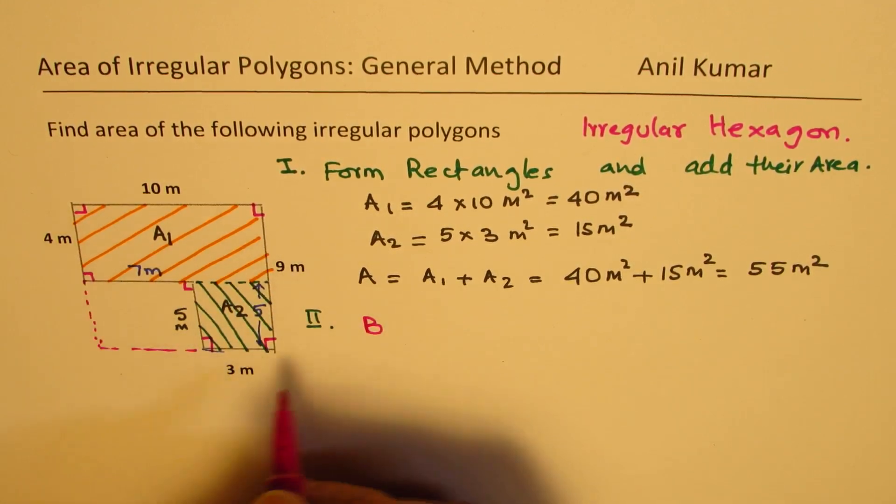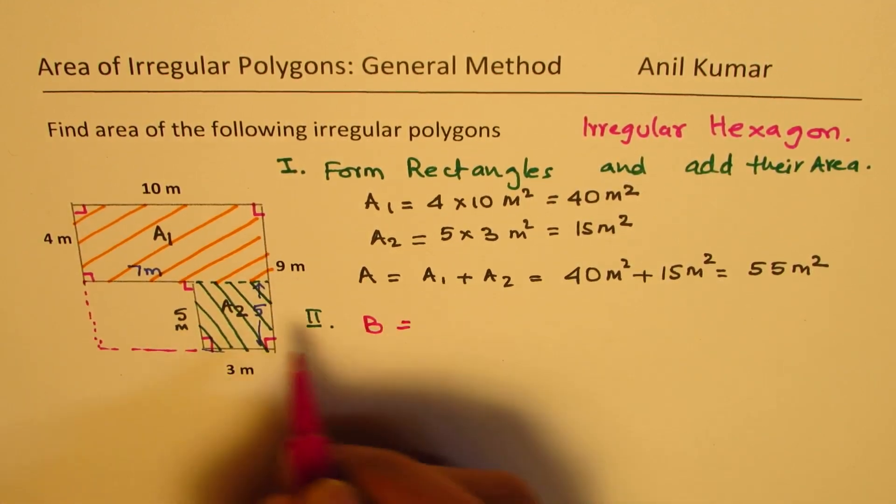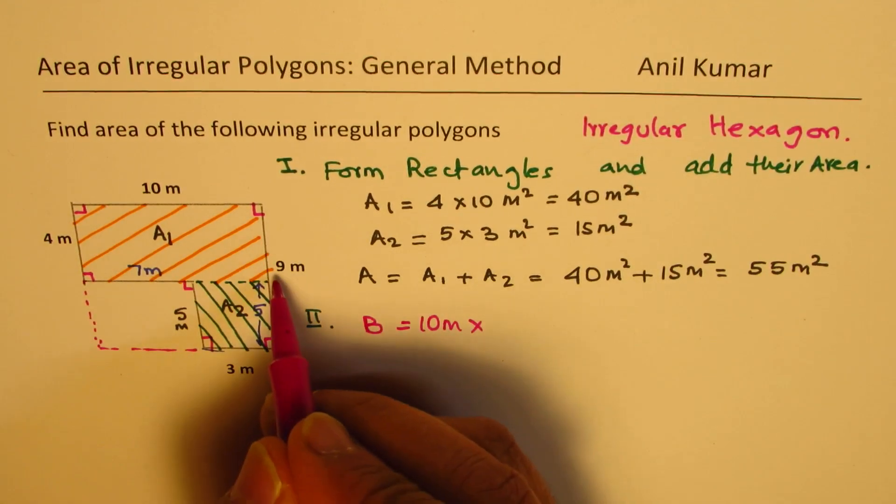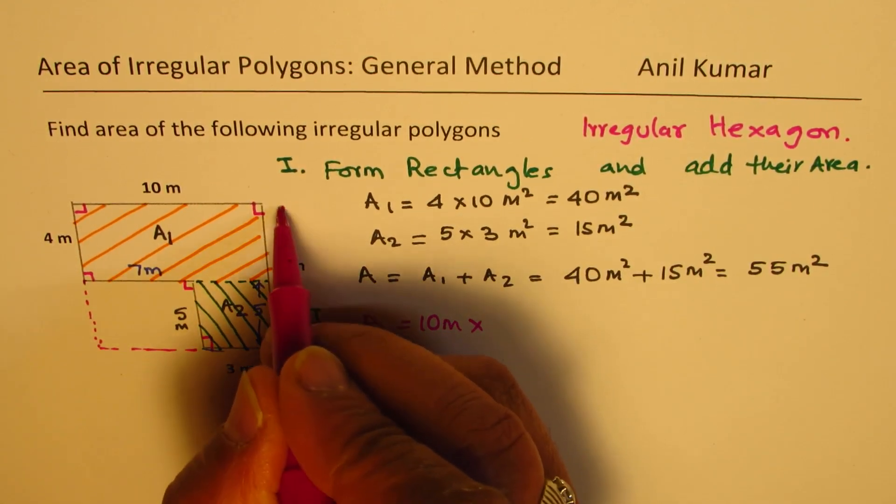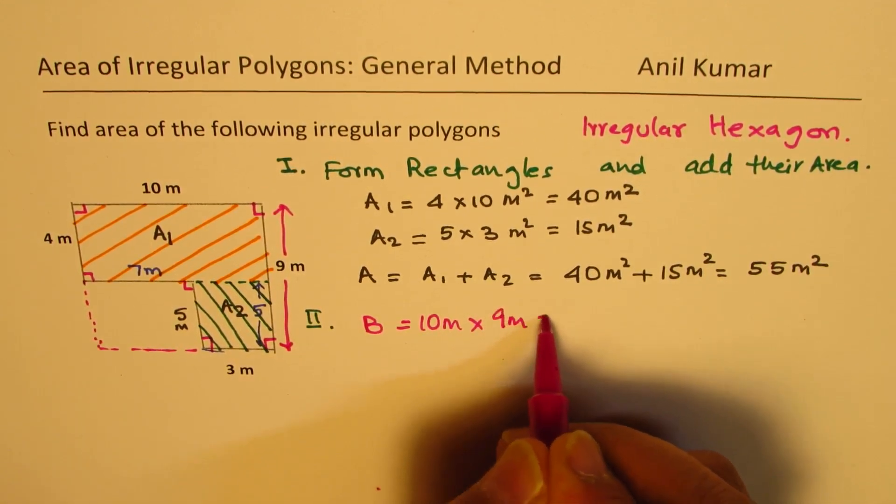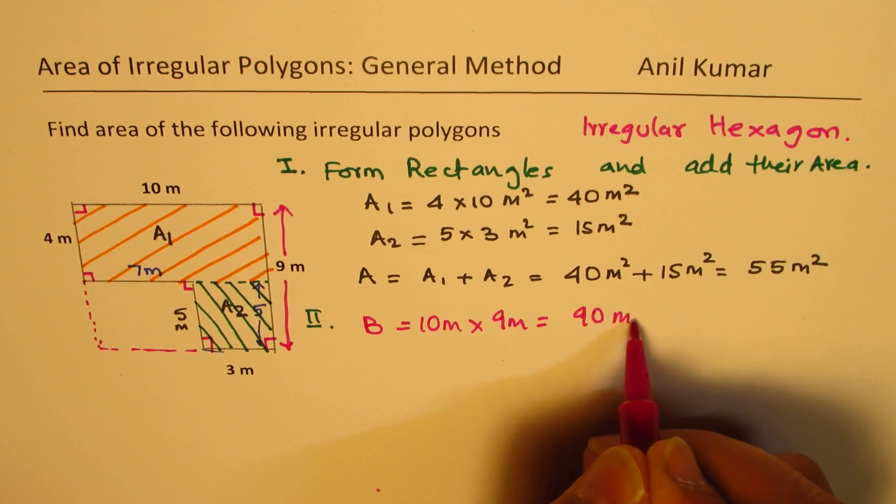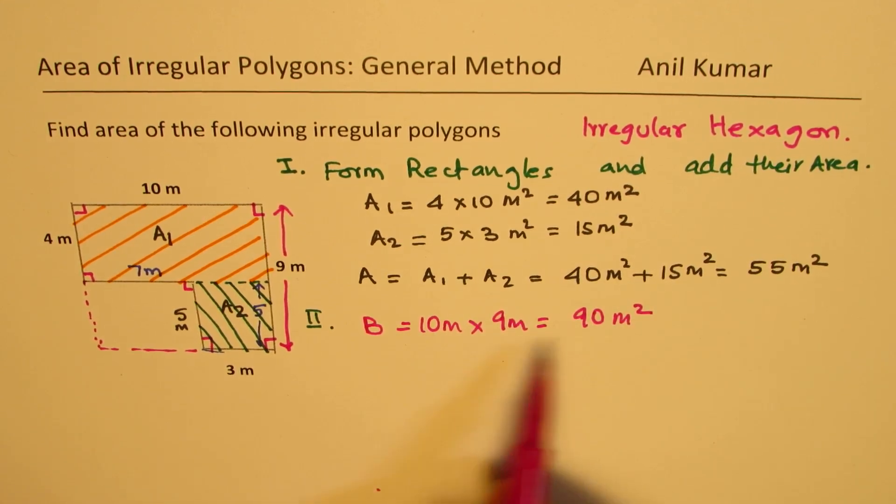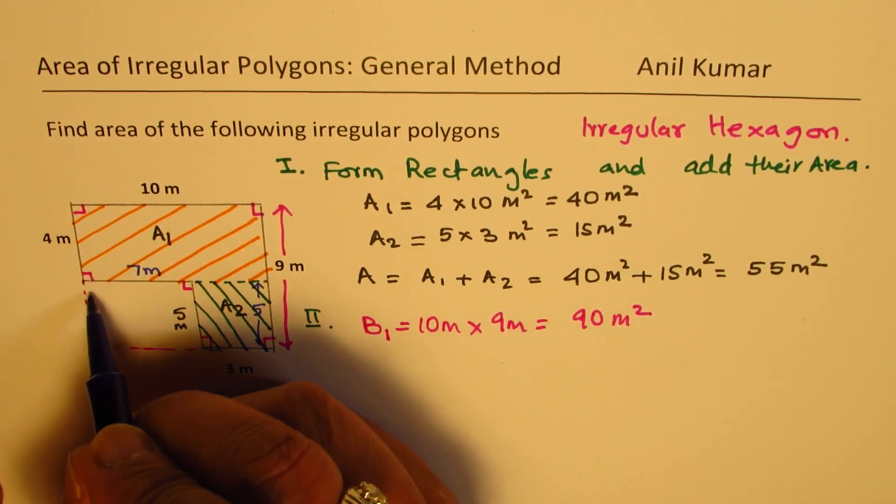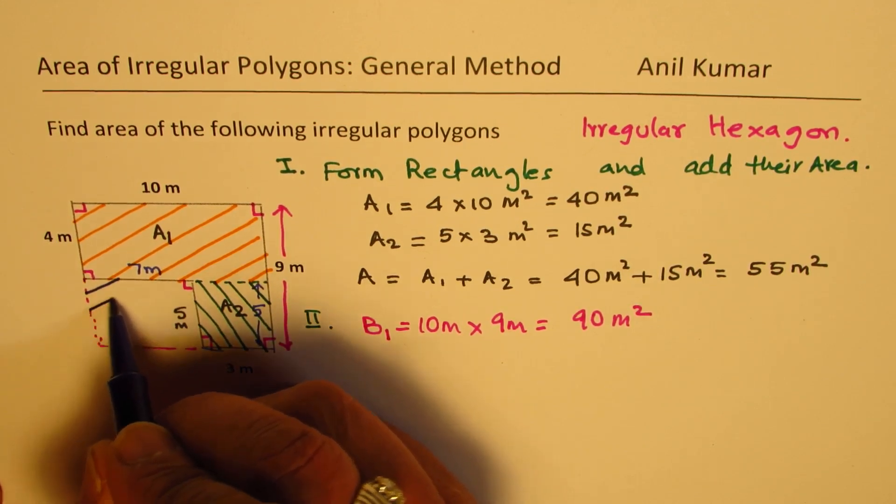So big rectangle is B, whose area is 10 meters by 9 meters. So that is the whole length, 9 meters. So 10 by 9 meters, which is 90 meters squared. Now from this area, let's call this as B1, we can take away the area which is not included. So this is the area which is not included.